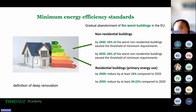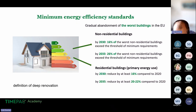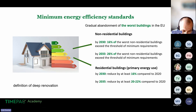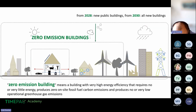Member states must ensure that at least 55 percent of the reduction in average primary energy consumption is achieved through renovation of the worst energy-performing residential buildings. Minimum energy efficiency standards are a really important part of the new directive. We will also look at zero emission buildings — there is now a new definition.